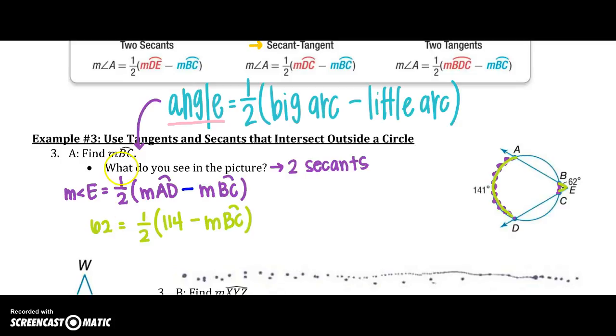You know how I am with fractions, so I'm going to multiply both sides by two over one. So I can get rid of this half. I'm left with 114 minus the measure of arc BC. That's going to equal 124.